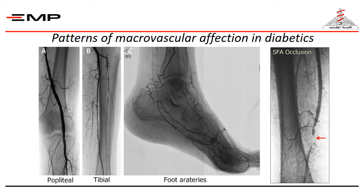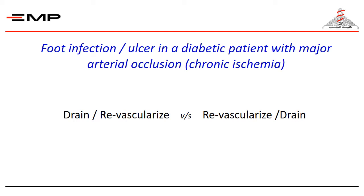Clinically, diabetics are more likely to have a palpable popliteal pulse with absent pedal pulses. Another commonly affected artery is the superficial femoral artery. In the presence of foot infection associated with chronic ischemia, the limb should be revascularized and infection should be drained.